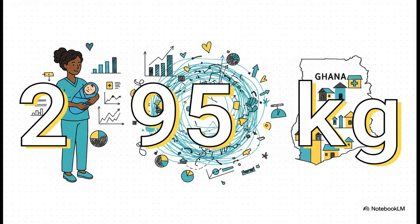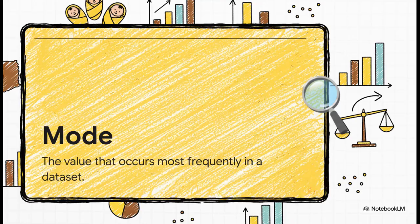Next, you've got the median. If you line up all the weights from smallest to largest, the median is the number smack dab in the middle. For her original list, that's 2.95 kilos. The superpower of the median is that it isn't easily fooled by outliers — so one really big baby or one really small one won't mess up the whole picture. And finally, there's the mode. It's simply the value that shows up most often. In our midwife's original list, every number was different, so there was no mode. But in a bigger data set, the mode tells you what the single most common measurement was.